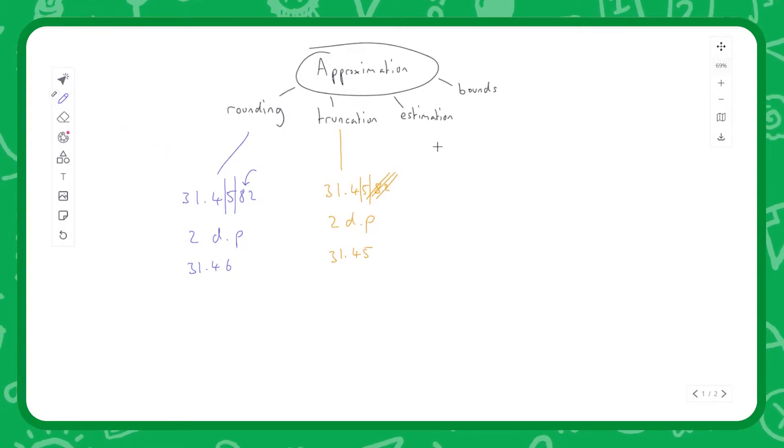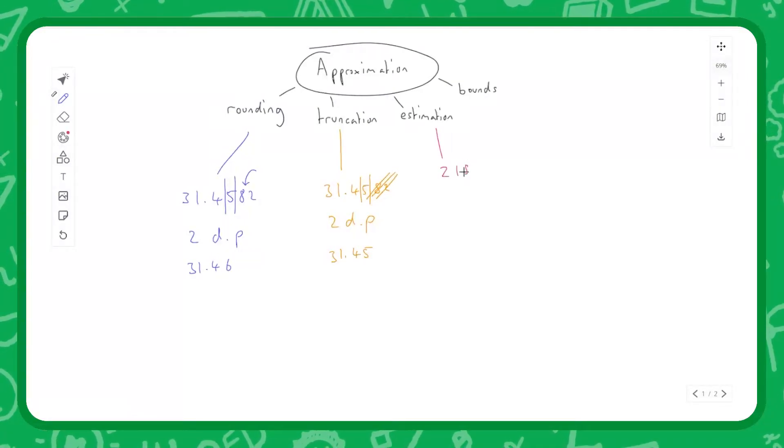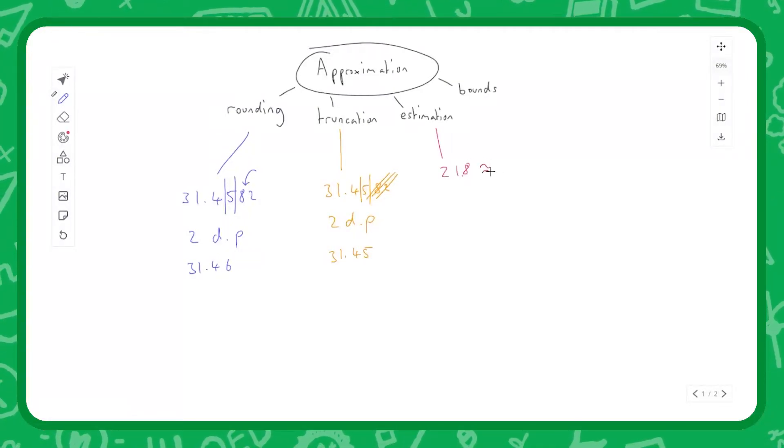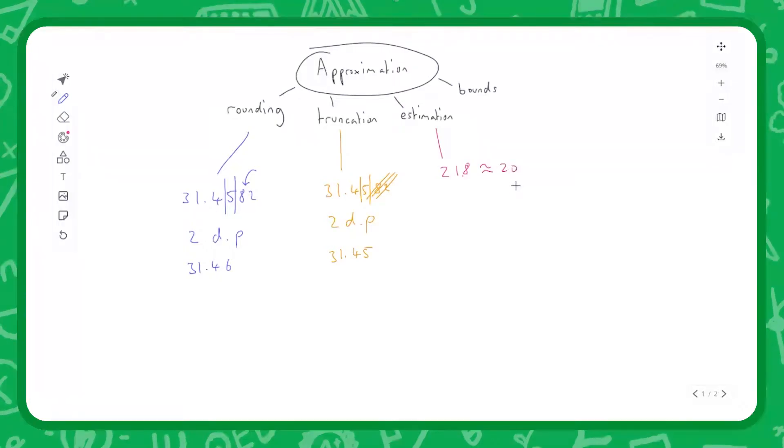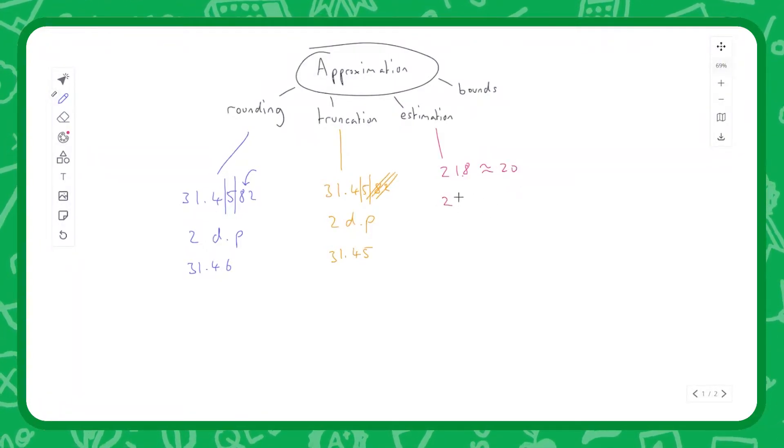Estimation is a way of very quickly doing some lazy maths. We could say, for example, 21.8 is roughly equal to 20. If we were doing a calculation, say 21.8 times 1.97...